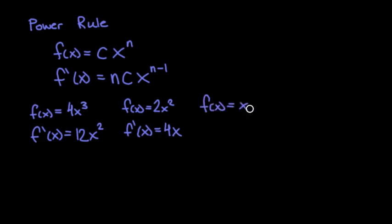If you have f(x) equals x, c equals 1 because 1 times x is just x, and n here is also 1. x to the first power is just x. So we'd get 1 times x to the 0 power, which is just—anything to the 0 power is 1. So the derivative is just 1.